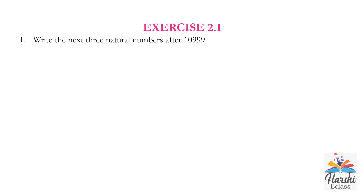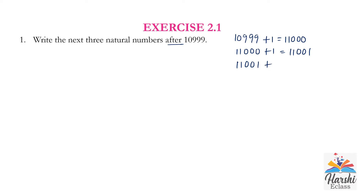Exercise 2.1, first question: write the next three natural numbers after 10,999. The 'next number' means the successor of the given number. To find the successor, we add 1 to it. So 10,999 plus 1 equals 11,000; 11,000 plus 1 equals 11,001; 11,001 plus 1 equals 11,002. The next three natural numbers after 10,999 are 11,000; 11,001; 11,002.